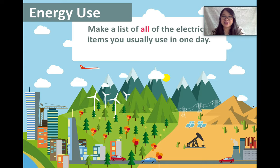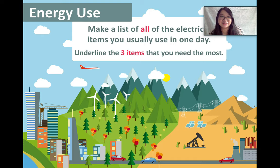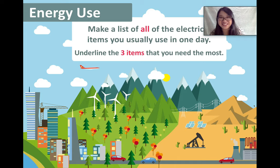Now let's talk about energy use. Make a list of all of the electrical items you use in one day, then underline three items that you need the most. Do this in your notebook and really think about the really important electronic items in your life. For me, number one is my Wi-Fi modem — I need my internet. Number two is my smartphone. And I guess number three is my TV. Take a moment, write your answers, and when you come back, we'll start with the listening part.